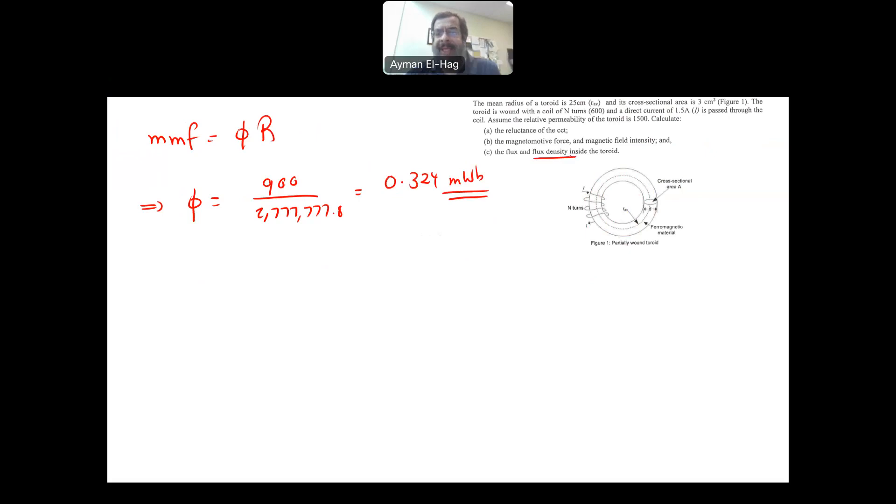Finally, find the flux density. B is equal to the flux divided by the area, the cross section area, which is the 0.324 times 10 to minus 3 divided by the cross section area, which is 3 centimeters squared times 10 to minus 4. And this will give me 1.08 tesla.